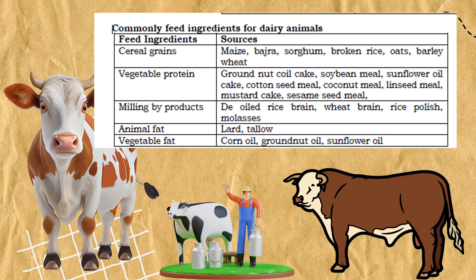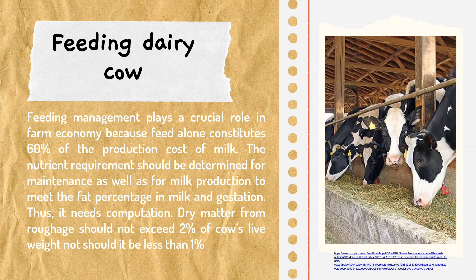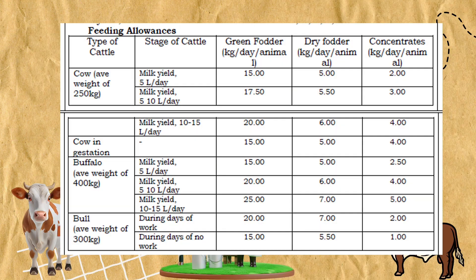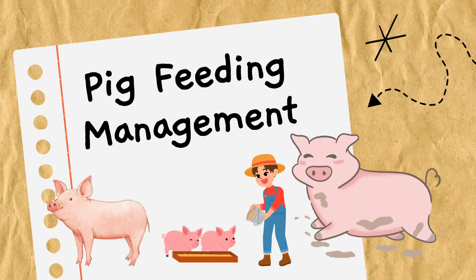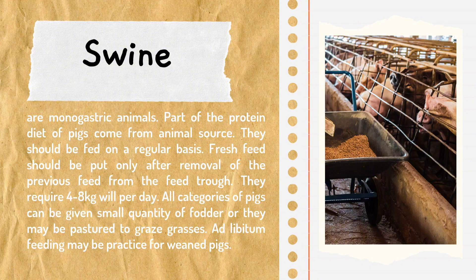For dairy animals, feeding management plays a crucial role in farm economy because feed alone constitutes 60 percent of the production cost of milk. These are the feeding allowances shown in the table. For pig feeding management, swine are monogastric animals; part of the protein in their diets comes from animal sources.